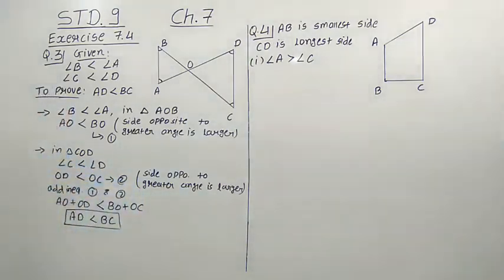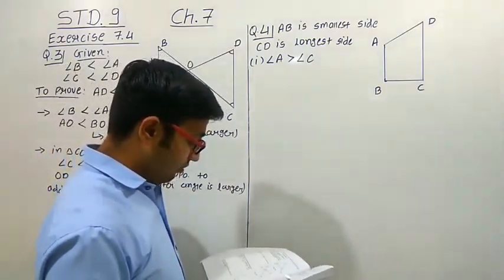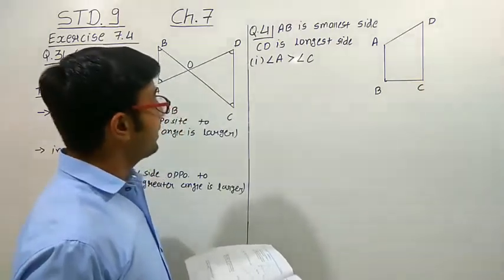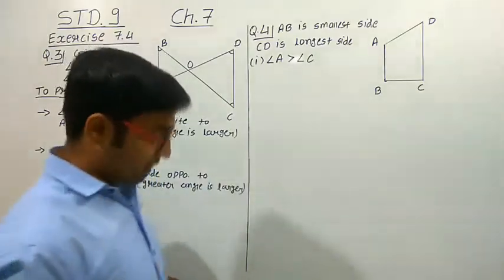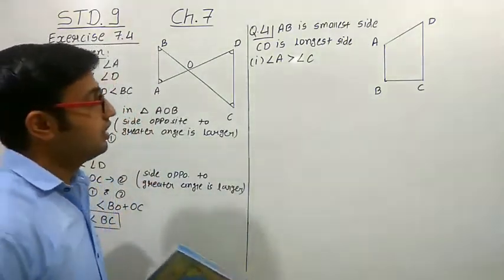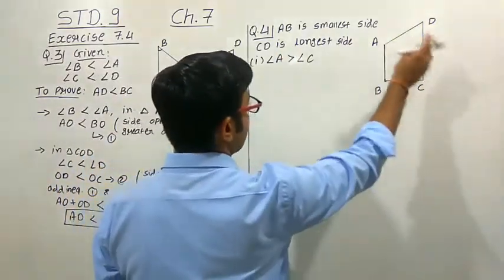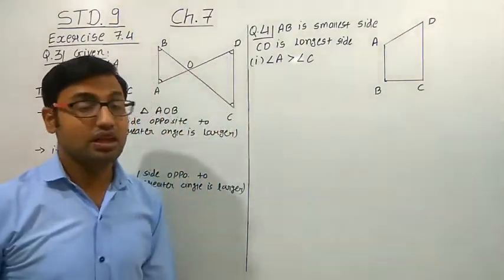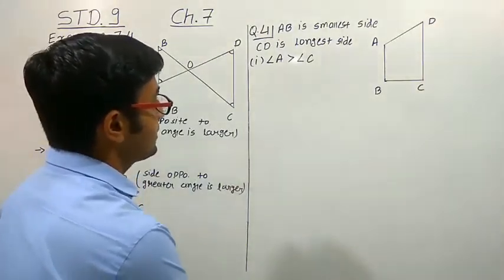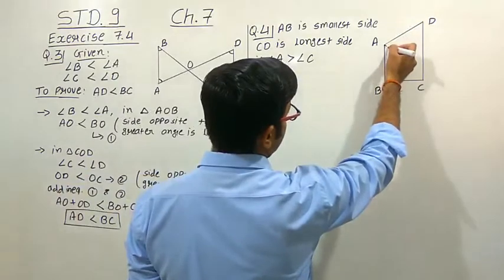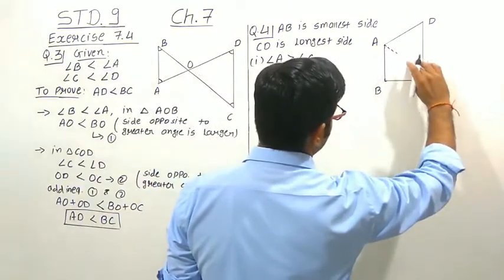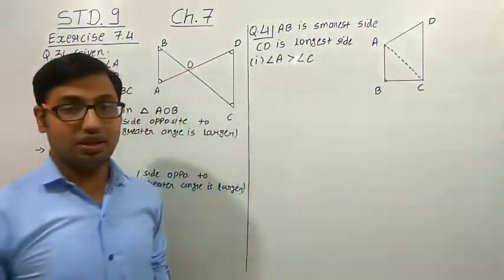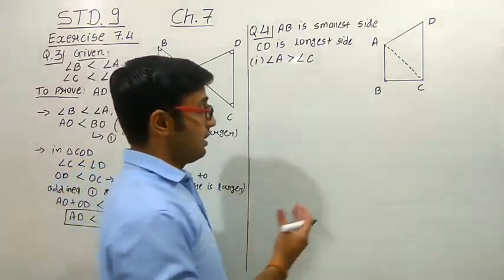Now let us study question number 4. AB and CD are respectively the smallest and longest sides of a quadrilateral ABCD. We have given the quadrilateral in the diagram. We have to show first that angle A is greater than angle C. We join A and C because the theorem is only applicable to triangles, not to a quadrilateral, so we join a diagonal.